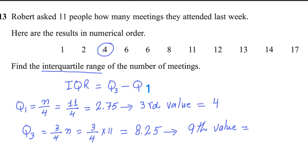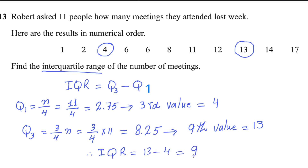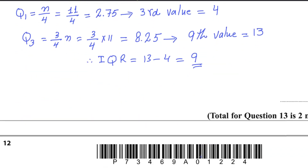Count the values: 1, 2, 3, 4, 5, 6, 7, 8, 9 — so the ninth value is 13. Therefore Q3 is 13. IQR equals Q3 minus Q1, substituting the values: 13 minus 4 gives an answer of 9. So the answer for question number 13 is 9.